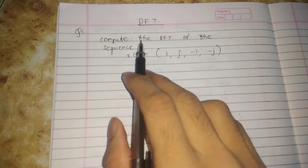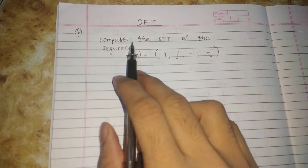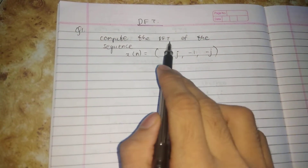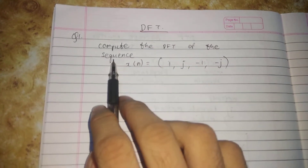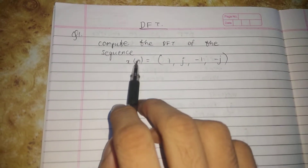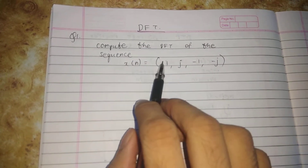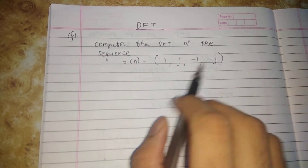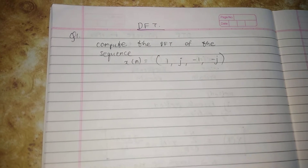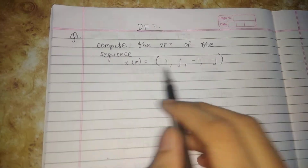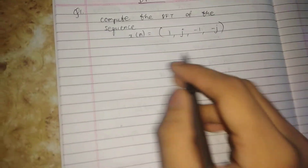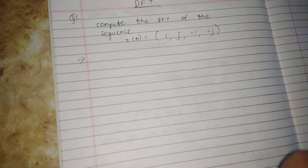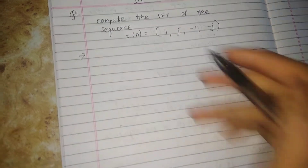Let's discuss this numerical. Compute the DFT of the following sequence. X of n is equal to the sequence: 1, j, minus 1, and minus j. In this, we will use the formula method.